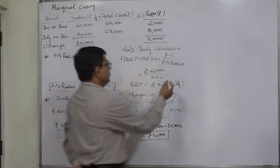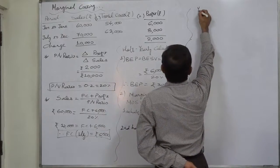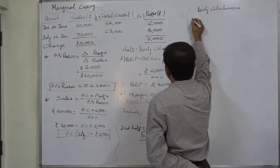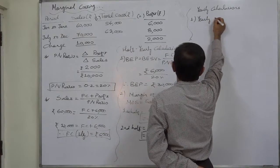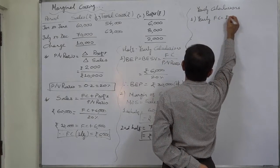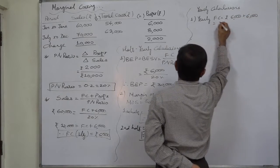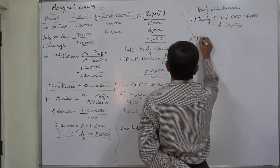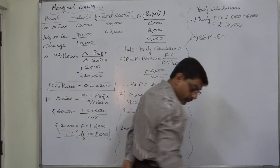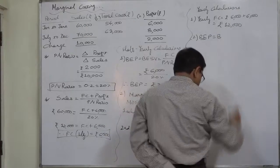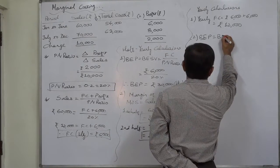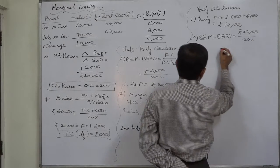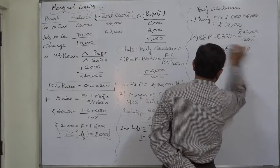Now let us calculate these figures for the full year. The yearly fixed cost will be rupees 6,000 for the first half and rupees 6,000 for the second half, so yearly fixed cost comes to rupees 12,000. The break-even sales value for the year will be exactly double: fixed cost rupees 12,000 divided by PV ratio 20%, giving break-even point for the year of rupees 60,000.